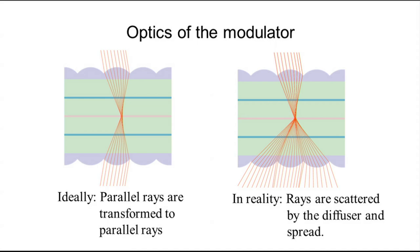This is the optics of the modulator in this example. Ideally, any light incoming to the modulator will go in this way. Any set of parallel rays will go parallel in this direction. But unfortunately, this is not always the case. Light is always scattered around this point and spreads, as shown in this figure.